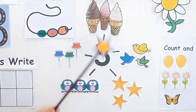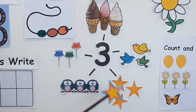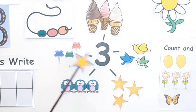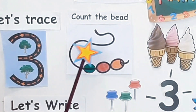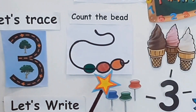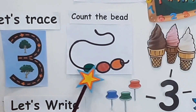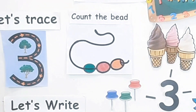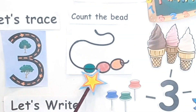Now it's time to count the beads. There is a string — let's count how many beads are in the string: 1, 2, 3. There are 3 beads in the string. How many beads? 1, 2, 3 — there are 3 beads in the string.